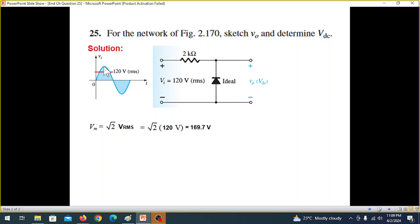The positive peak is at 169.7 volts, and the negative peak is at negative 169.7 volts. This is a sinusoidal signal. When the diode output is positive, it conducts. When it's negative, the diode is reverse biased.